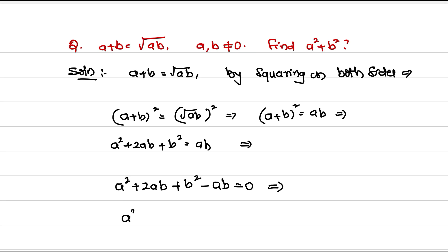That implies a² + ab + b² = 0. This is the simplified equation derived from a + b = √(ab), where a and b are not equal to 0. The question now is: under what values of a and b will a² + ab + b² = 0?